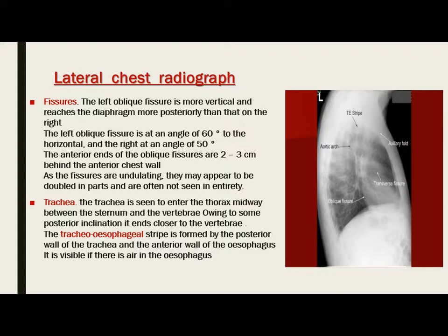The trachea is seen to enter the thorax midway between the sternum and the vertebrae, owing to the posterior inclination it ends closer to the vertebrae. On the lateral chest radiograph, the tracheoesophageal strip is formed by the posterior wall of the trachea and the anterior esophageal wall, and it is visible if there is air within the esophagus. This tracheoesophageal strip may or may not be seen depending on whether there is air in the esophagus.